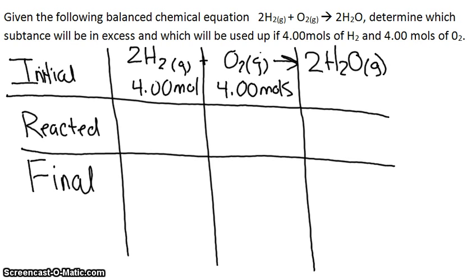So our ratio for H2 to O2 is 2 to 1. That is the same as the ratio 4 to 2. So for reacted, we are going to go 4.00 moles reacted because of our 4 and our ratio.